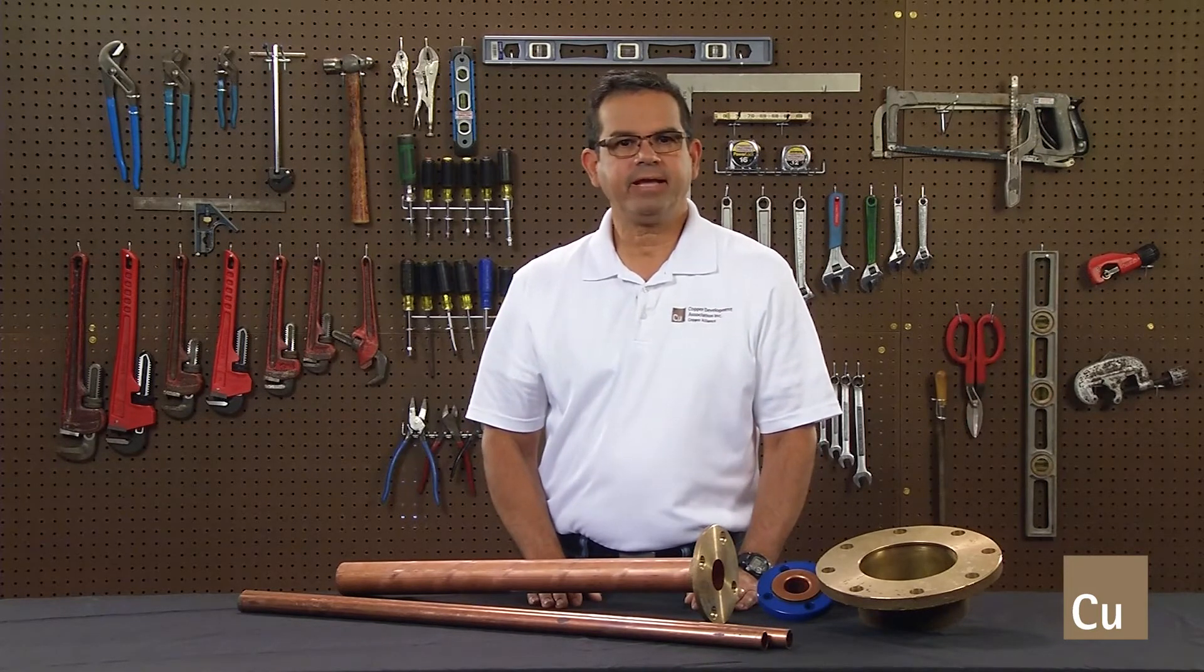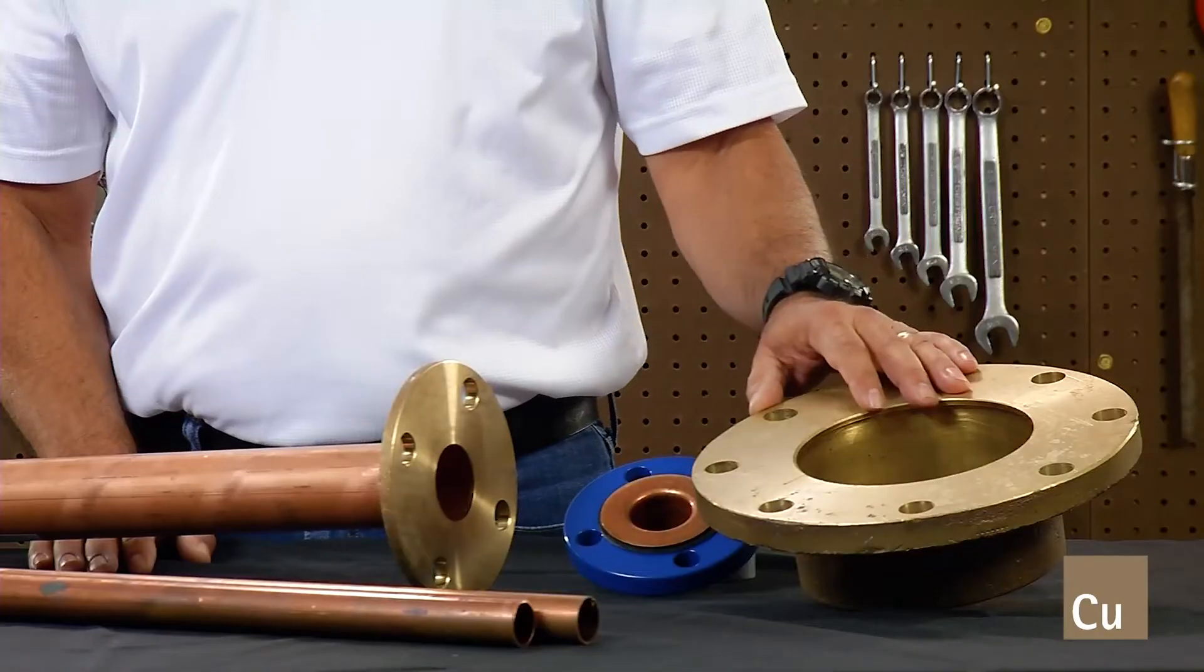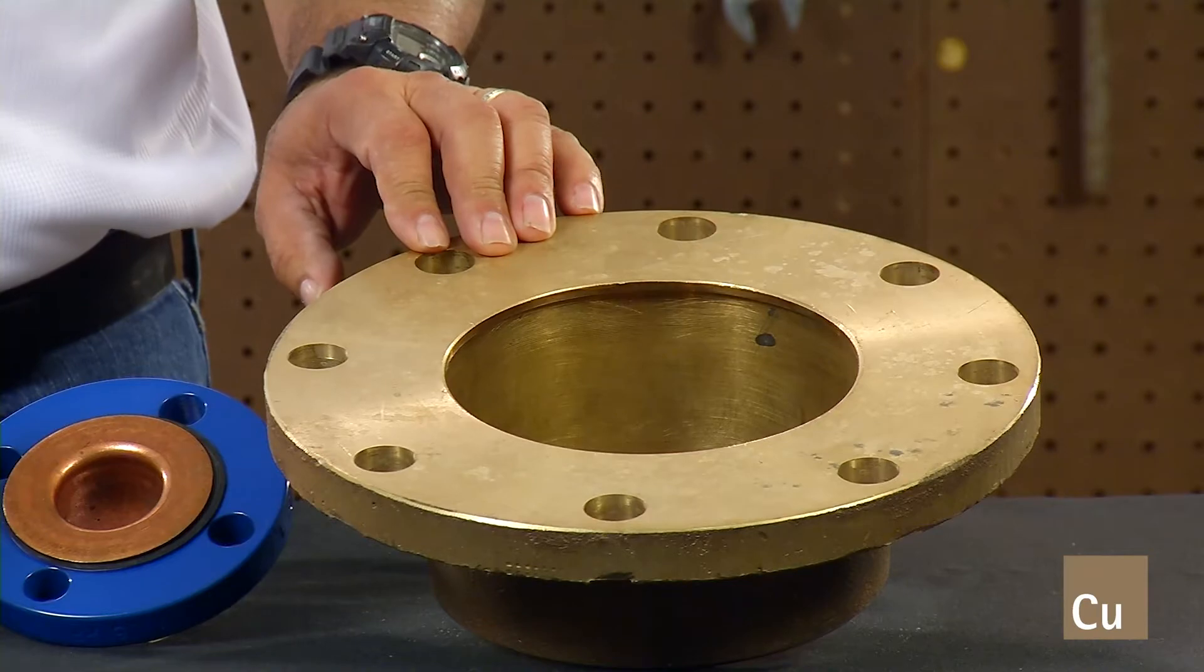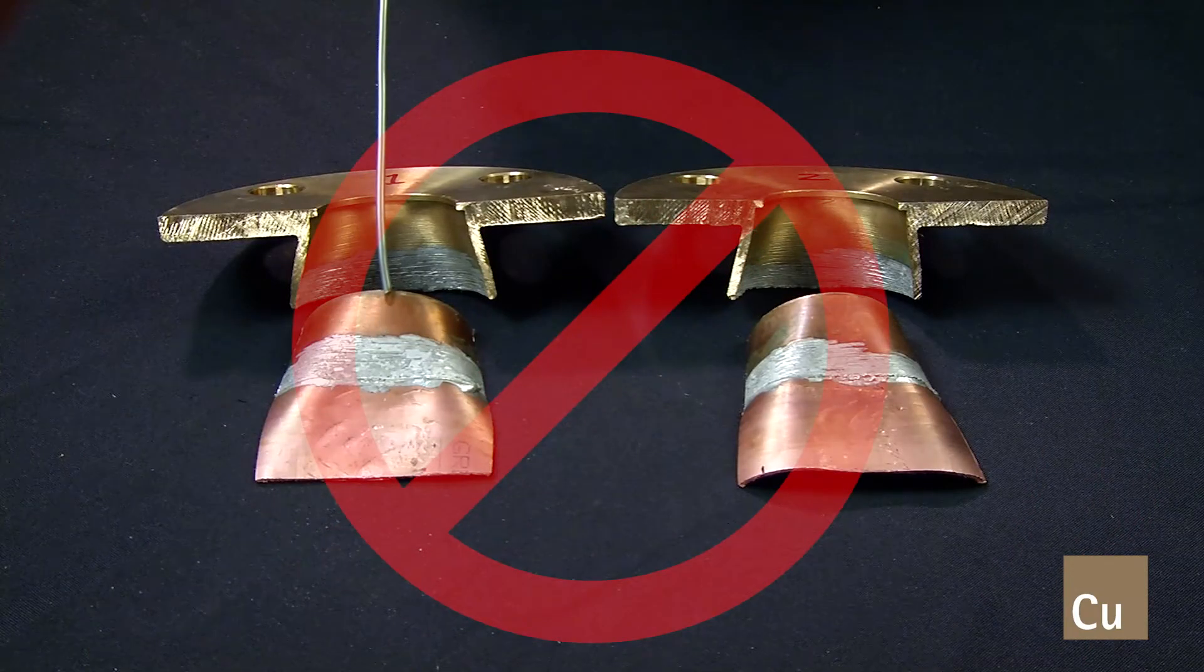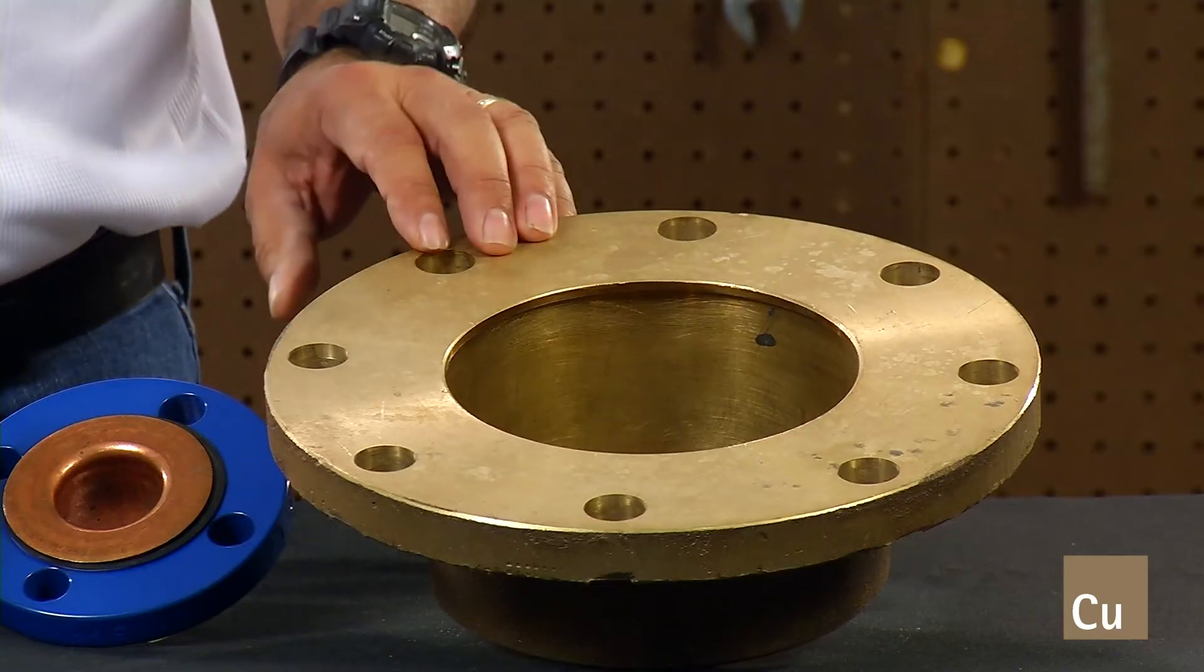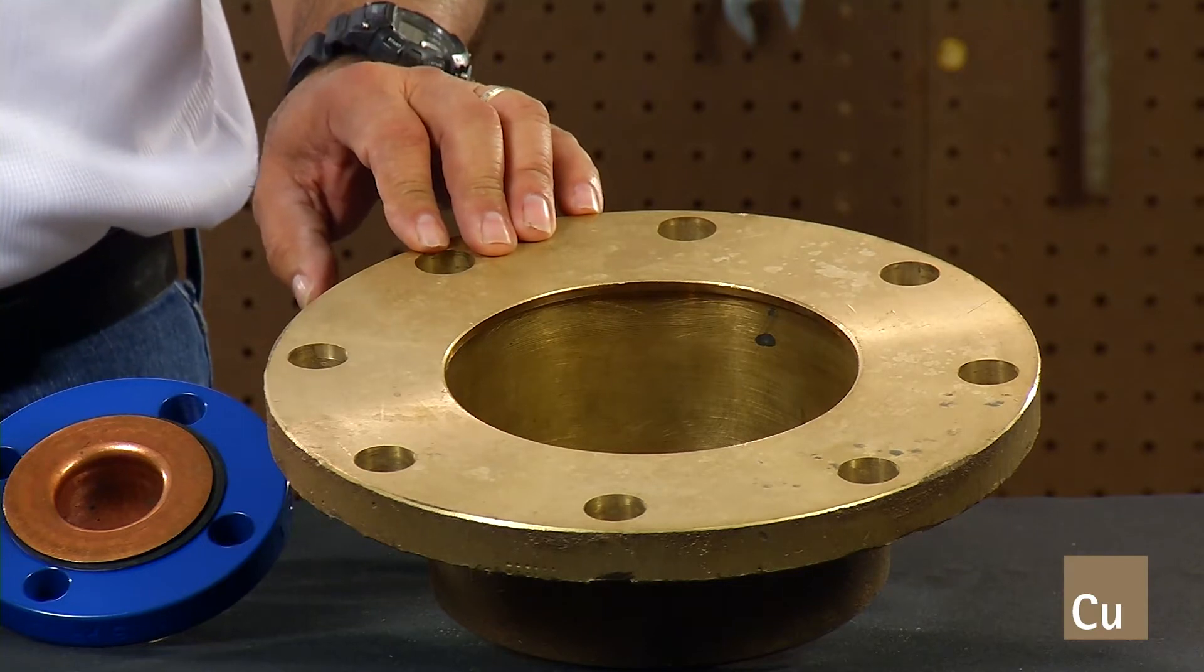Two variables that must be taken into account when soldering copper alloy flanges are their bulk and weight. The most important thing to understand is that flanges contain a huge heat sink in the flange face itself. This tends to pull heat away from the solder cup and can lead to insufficient solder fill in the fitting socket. In this case, careful additional heating of the flange face may be necessary.